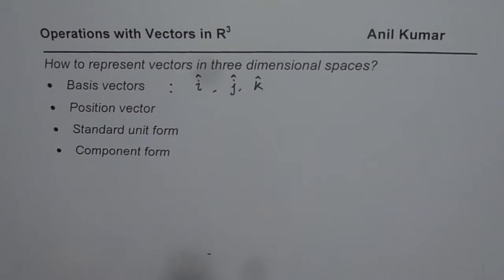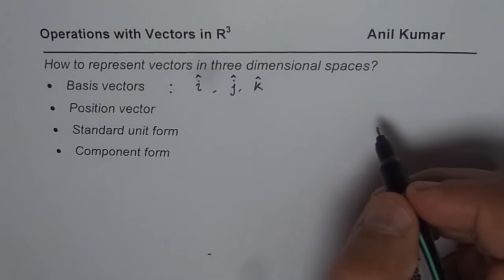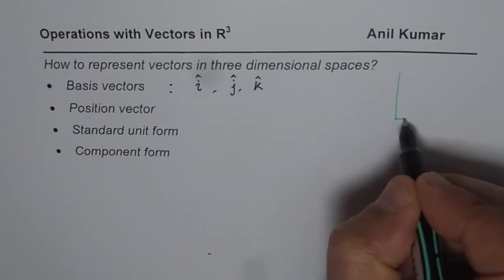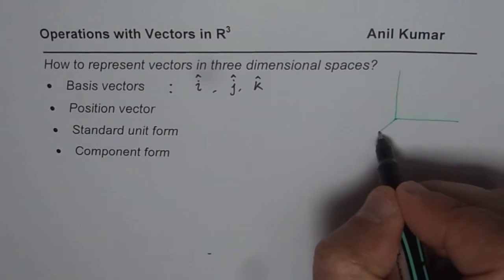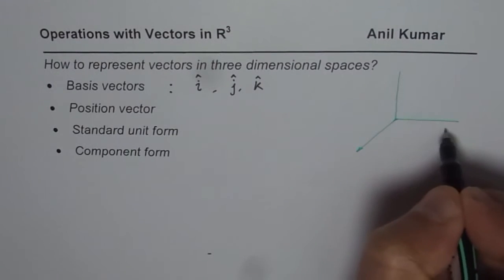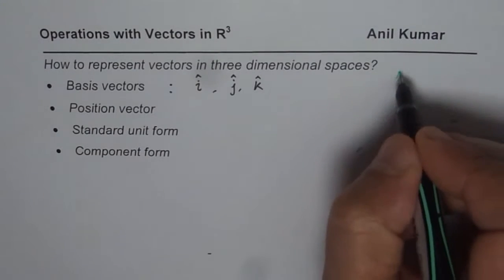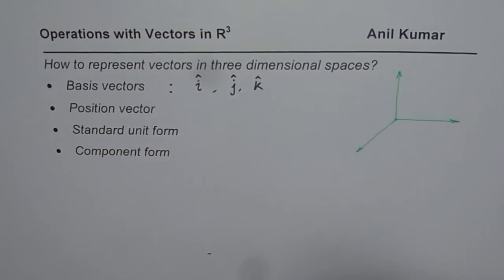These are the three unit vectors which are like, if you look at the corner of your room, it looks kind of like this. So whenever we'll make or represent vectors in 3D, we are going to use these three axes.